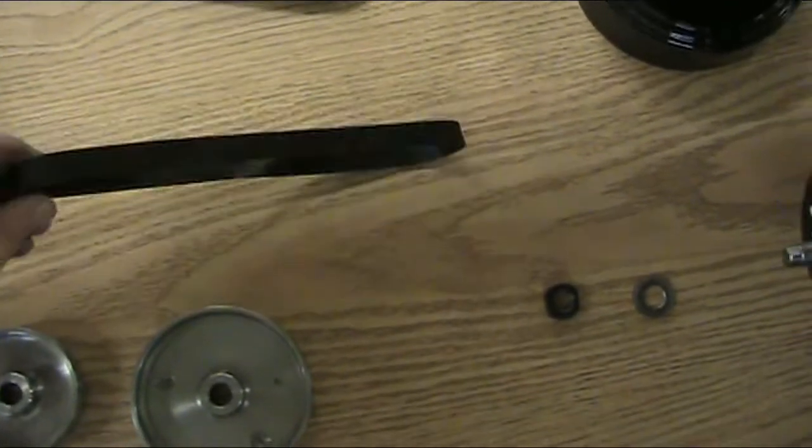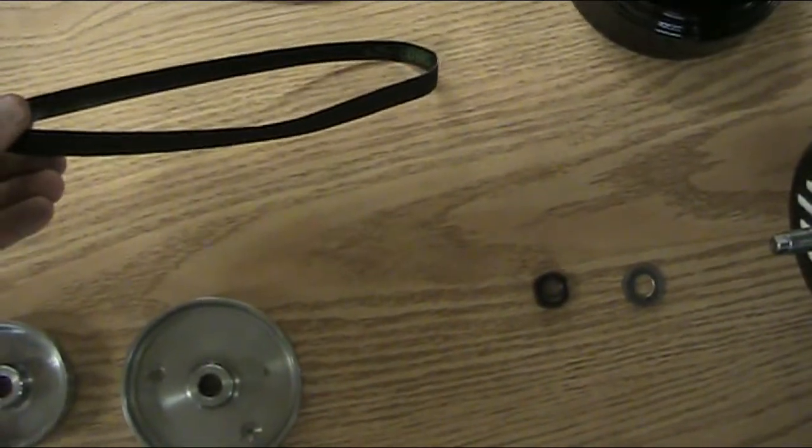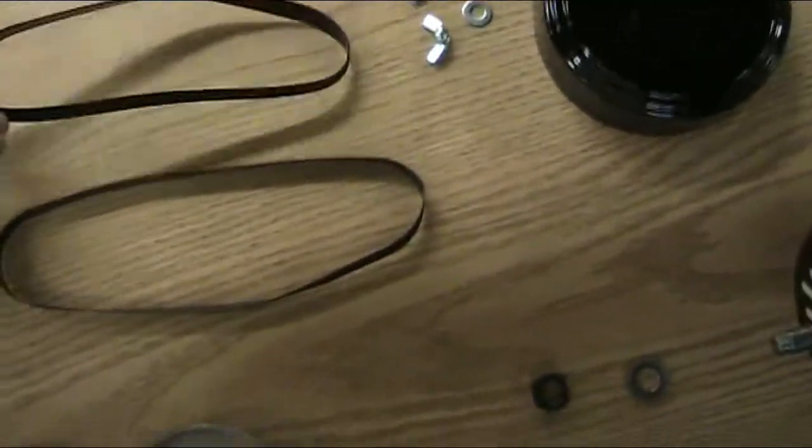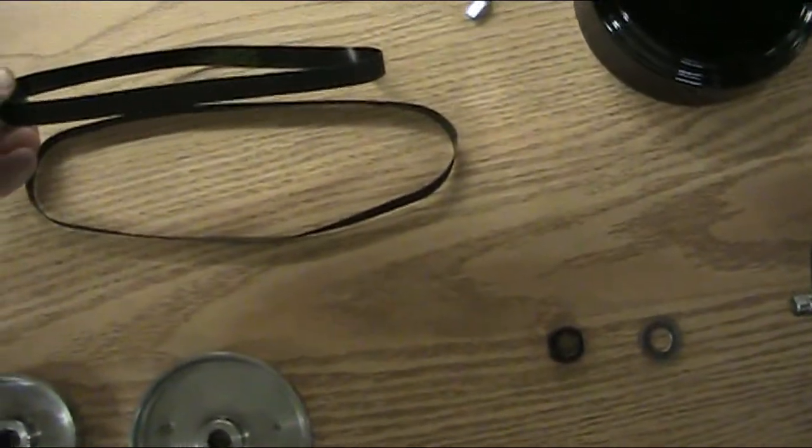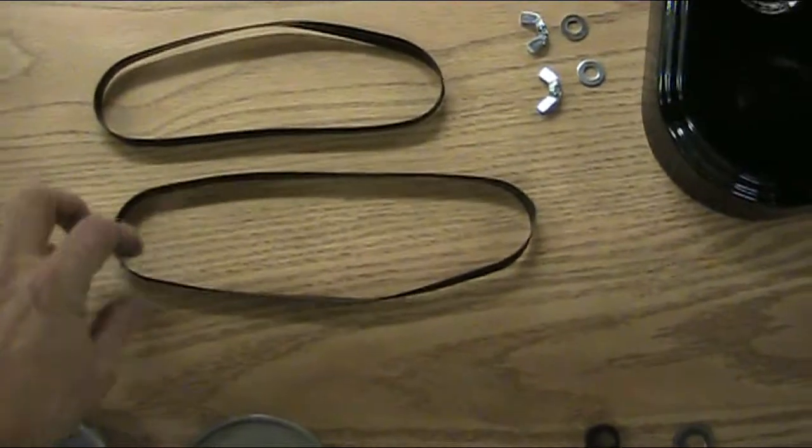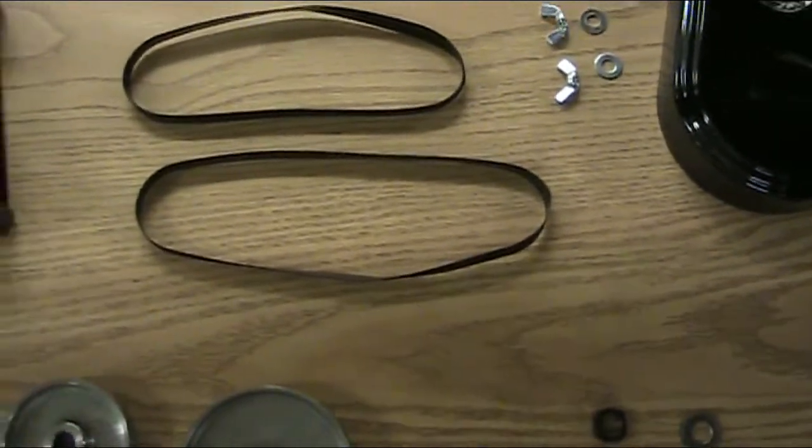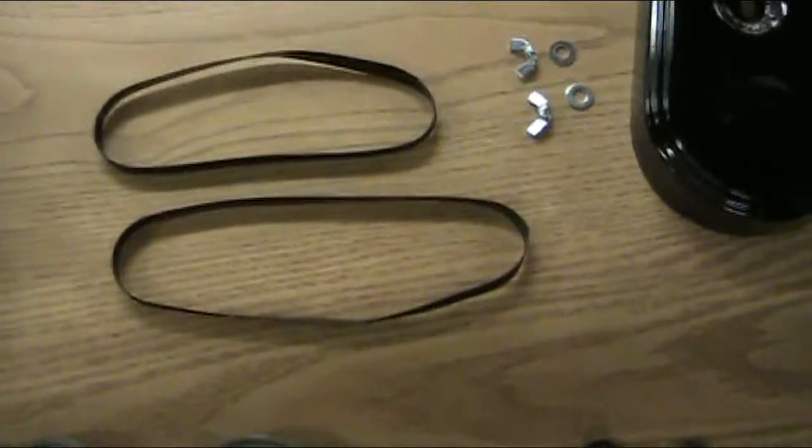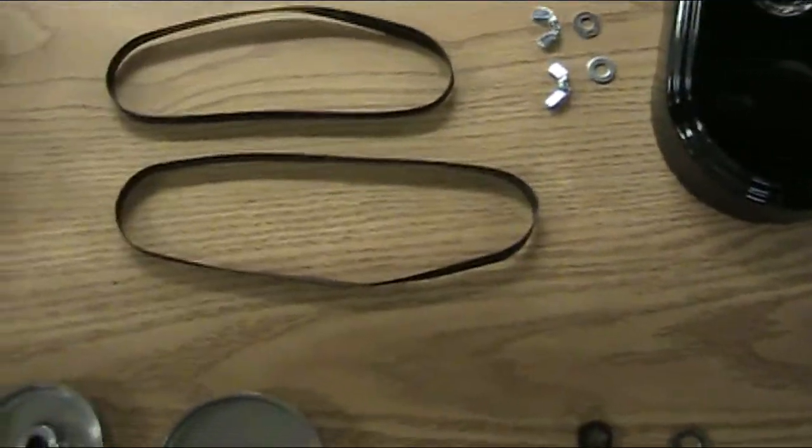You have one belt that is a 429-886, and another belt that's a 429-885. As you notice, the 85 is a little bit shorter, so that's going to be a different type of spindle speed as well as a different pulley system for each particular one.